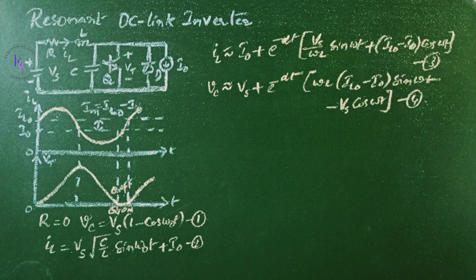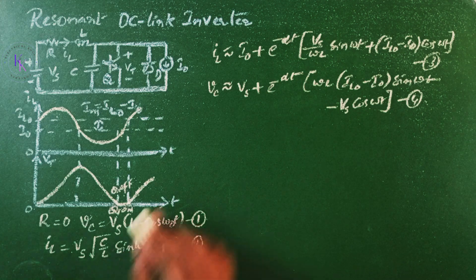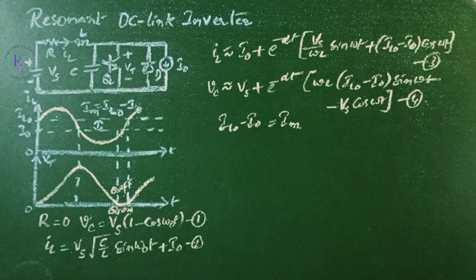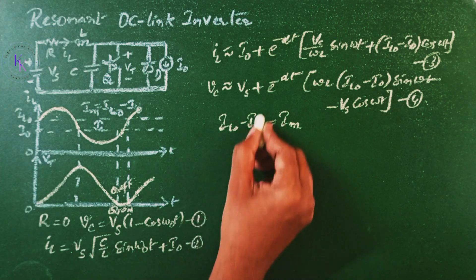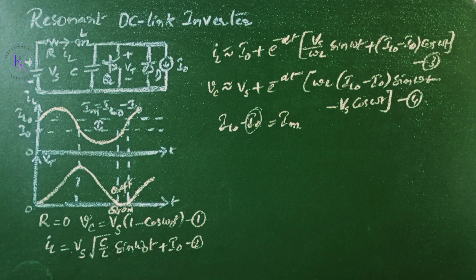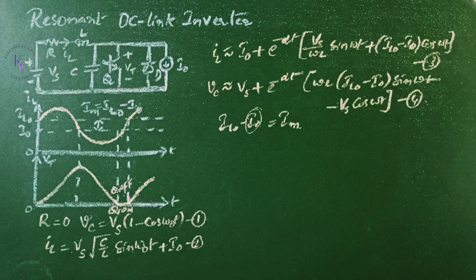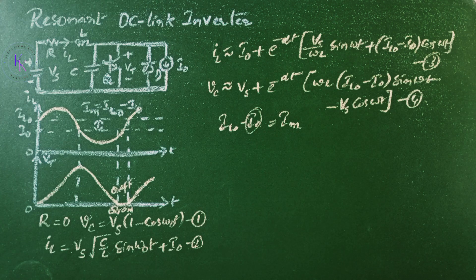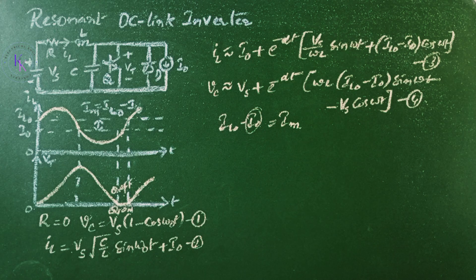Now, it can be noted that the capacitor voltage depends only on the difference between IL0 and I0, which is nothing but Im, rather than the load current I0 only. Thus, the control circuit should monitor IL0 minus I0 when the switch is conducting and turn off the switch when the desired value of Im is reached.